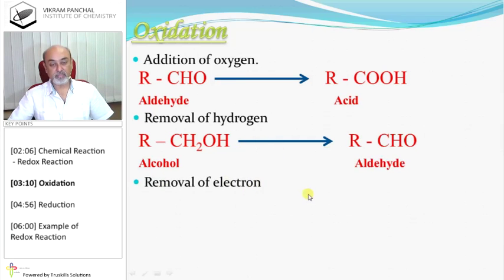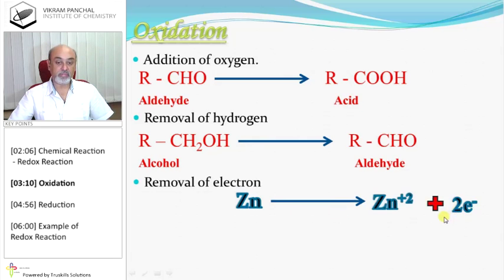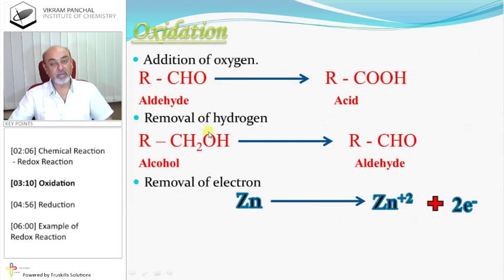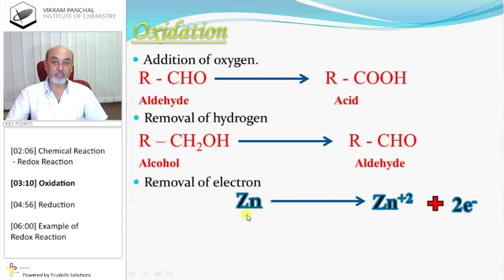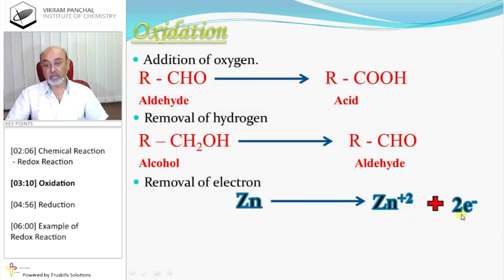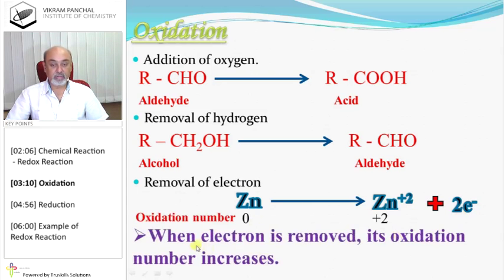Removal of electron is also oxidation. Zinc, when it releases electrons, becomes Zn²⁺ and 2 electrons are released — that is also oxidation. So there are three definitions of oxidation. In organic reactions, it is easy to see addition of oxygen or removal of hydrogen. But in inorganic reactions, we find oxidation with reference to electrons. When any element donates an electron, it is called oxidation, and we write the electron on the right-hand side along with the product. During oxidation, oxidation number increases.